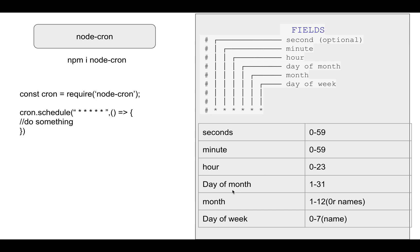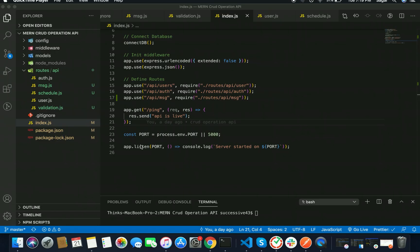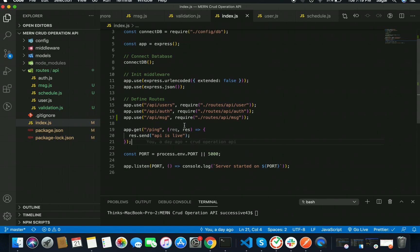For day of month, you can provide any value within the range of 1 to 31. For month, you can provide 1 to 12 or also the name of the month. For day of week, you can provide a value between 0 to 7, or also the name of the day. Note that both 0 and 7 stand for Sunday. Now let's start the coding section.